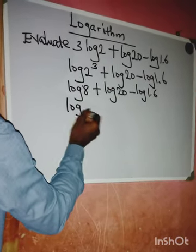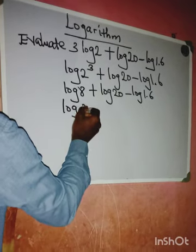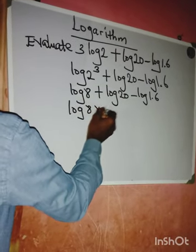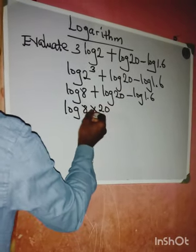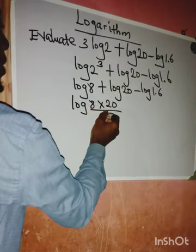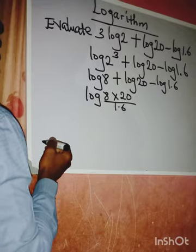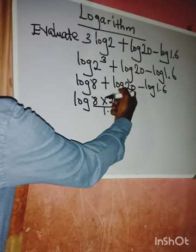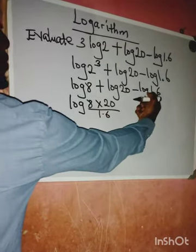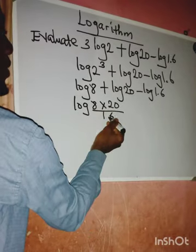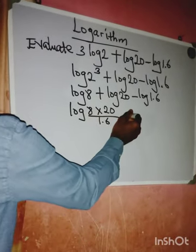...multiply by 20 divided by 1.6. This multiply by this, everything divided by 1.6.